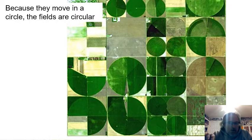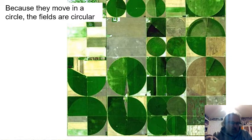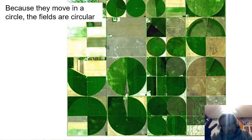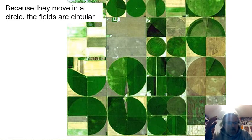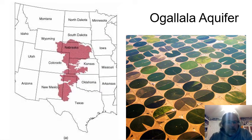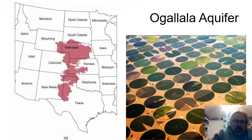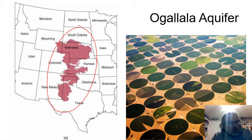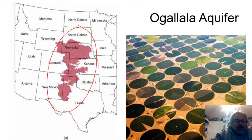Because those wells move around a center pipe, you get weird circular shapes of fields out in the West. If you fly in an airplane going west you'll see these circles — you won't see them much in Georgia because we get enough rain. The big collection of water underground in the middle of the country is called the Ogallala Aquifer, named for a town in Nebraska near the center of the aquifer.